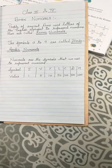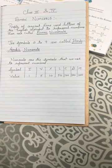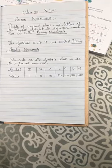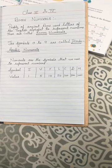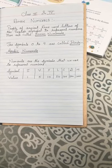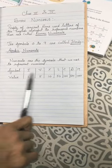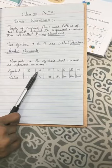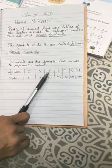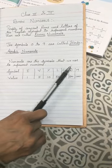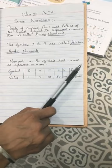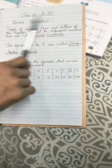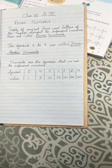But in Roman numerals, there are 7 symbols to represent the numbers. Those 7 symbols are: I, V, X, L, C, D, M. These are the 7 symbols of Roman numerals.